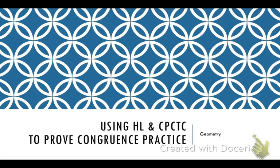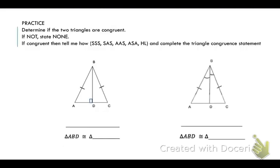In this video, we're going to practice using hypotenuse leg and CPCTC in proofs. Determine if the two triangles are congruent. If they are not, state none. If they are congruent, then tell me how, using one of the five ways we've learned to prove triangle congruence, and complete the triangle congruent statement.